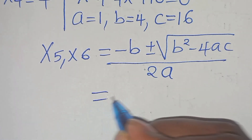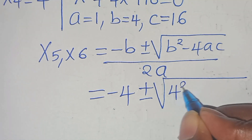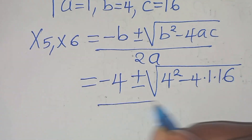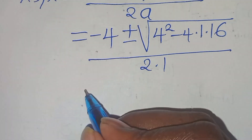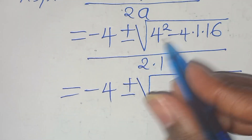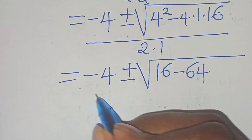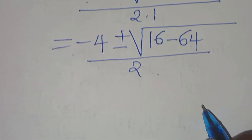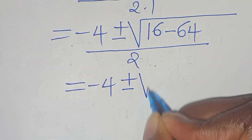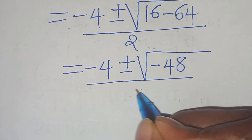Substituting: minus 4, plus or minus the square root of 4 squared minus 4 times 1 times 16, divided by 2 times 1. This gives minus 4 plus or minus the square root of 16 minus 64, which is minus 48, divided by 2.